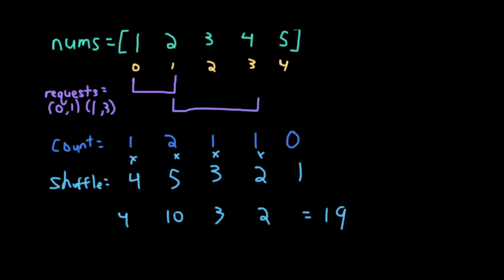Now notice, I didn't have to do 4, 5, 3, 2. I could have done 4, 5, 2, 3, 1, and that would have given me the same answer. And that's why this question isn't asking for the specific permutation, it's just asking for a permutation that gives the largest value like this.